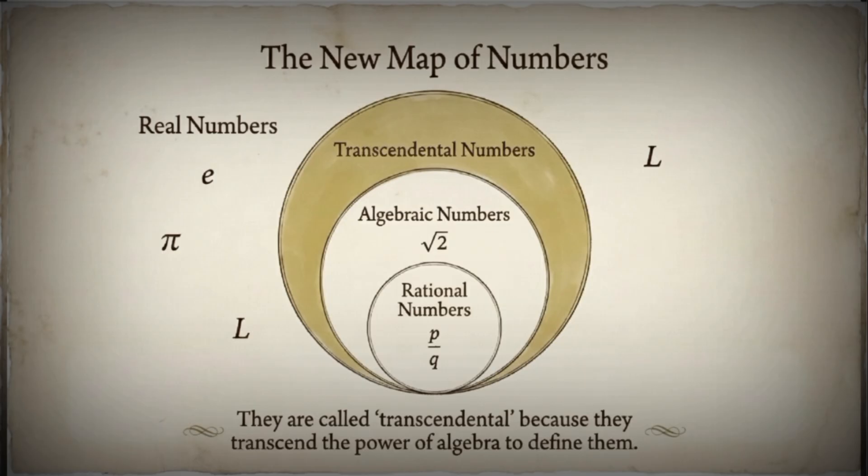We can visualize the hierarchy of numbers like this. The innermost circle contains the rational numbers. The middle ring contains all algebraic numbers, including the rationals. And the outer region? That contains the transcendental numbers, numbers that transcend algebra and escape the reach of polynomial equations.